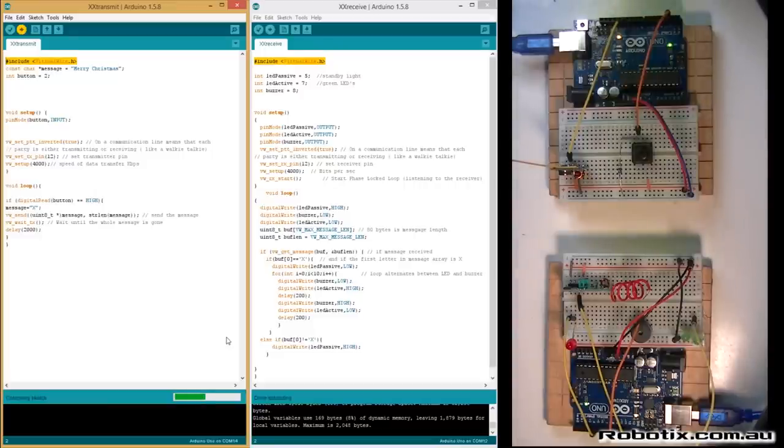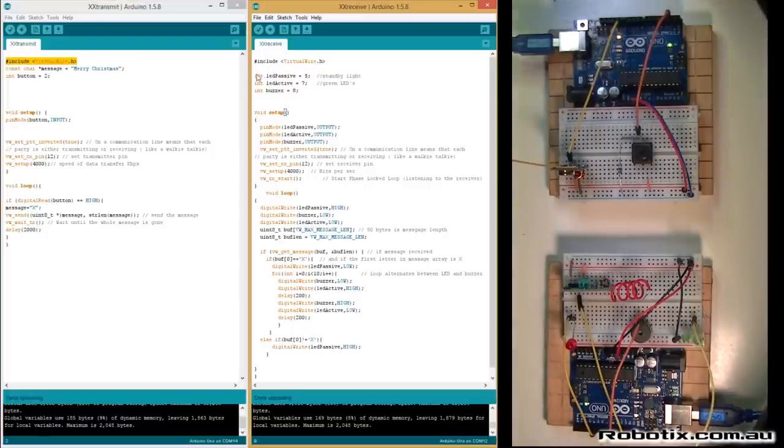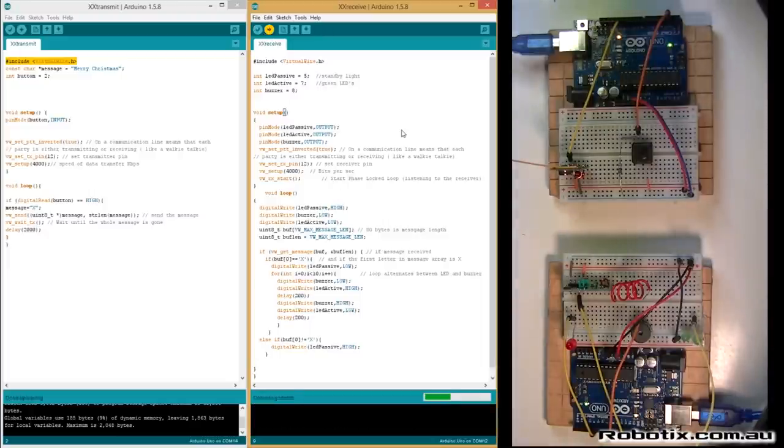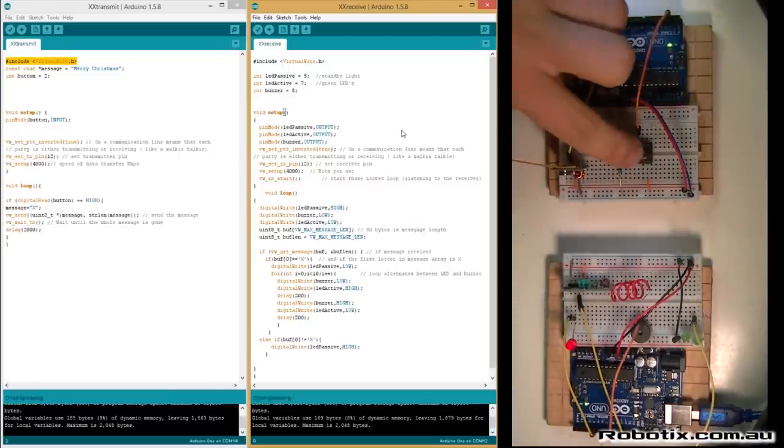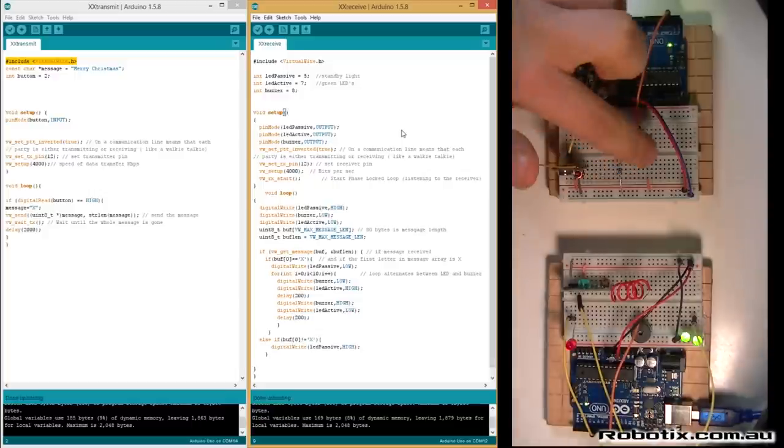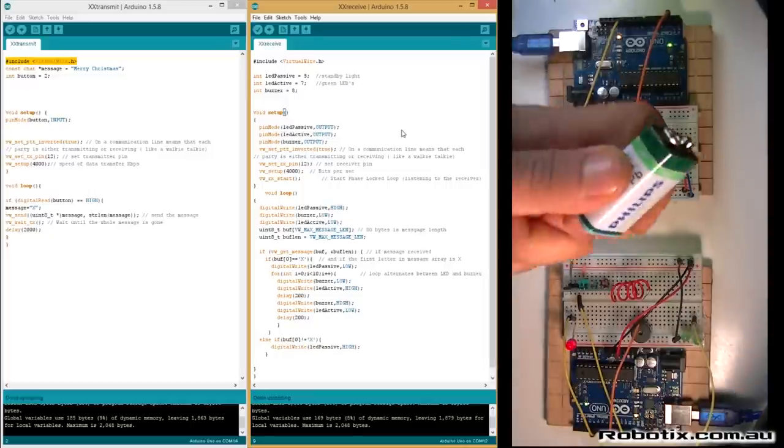So, let's upload these. There's nothing interesting going to happen here, except we're going to get a double blink on our Arduino that tells us the code's uploaded. And, with the receiver, we are hopefully going to get that red light to turn on, which will indicate that the circuit is in standby. And it does. Okay, moment of truth. Works.